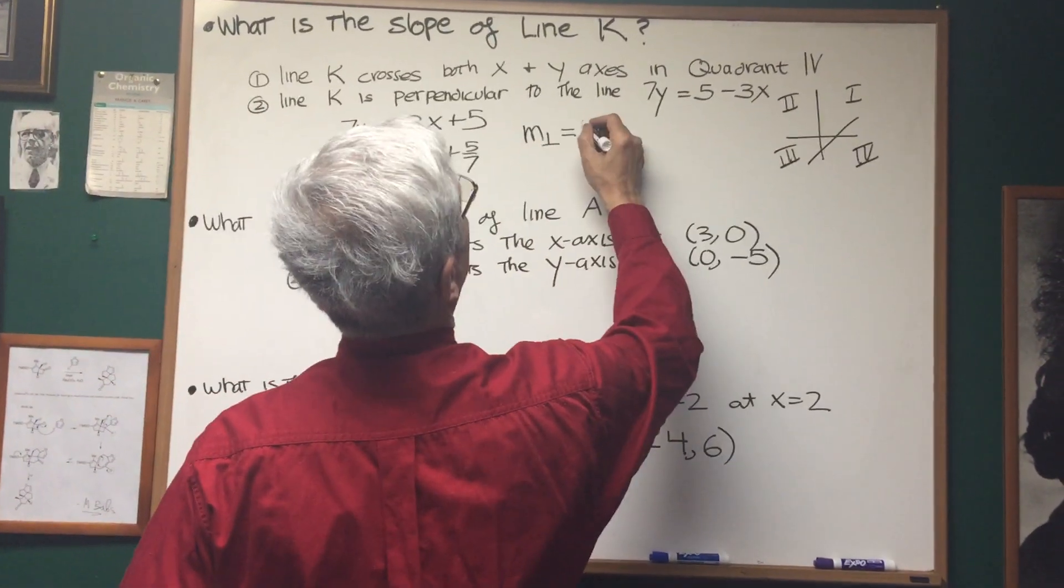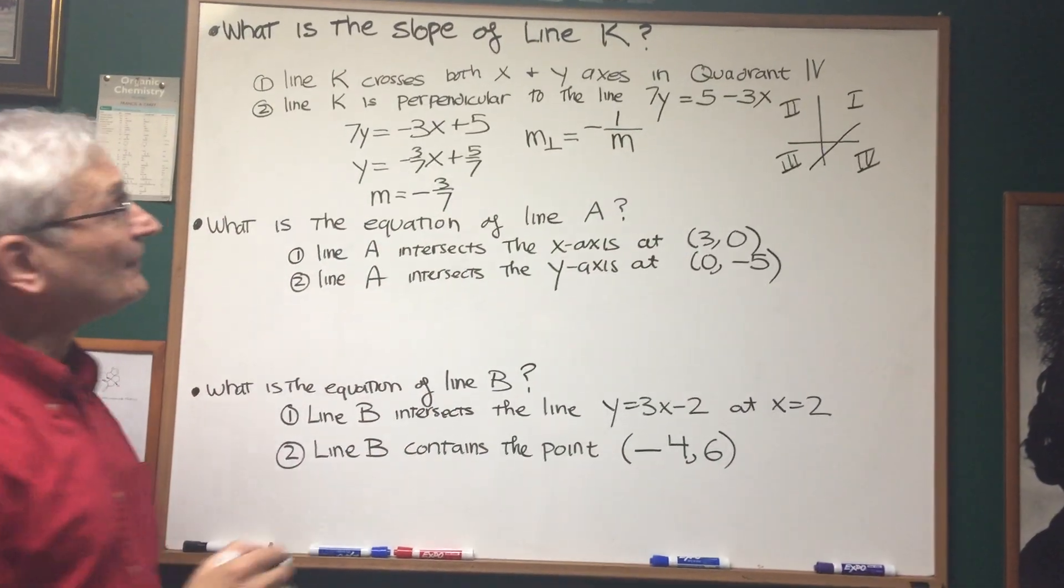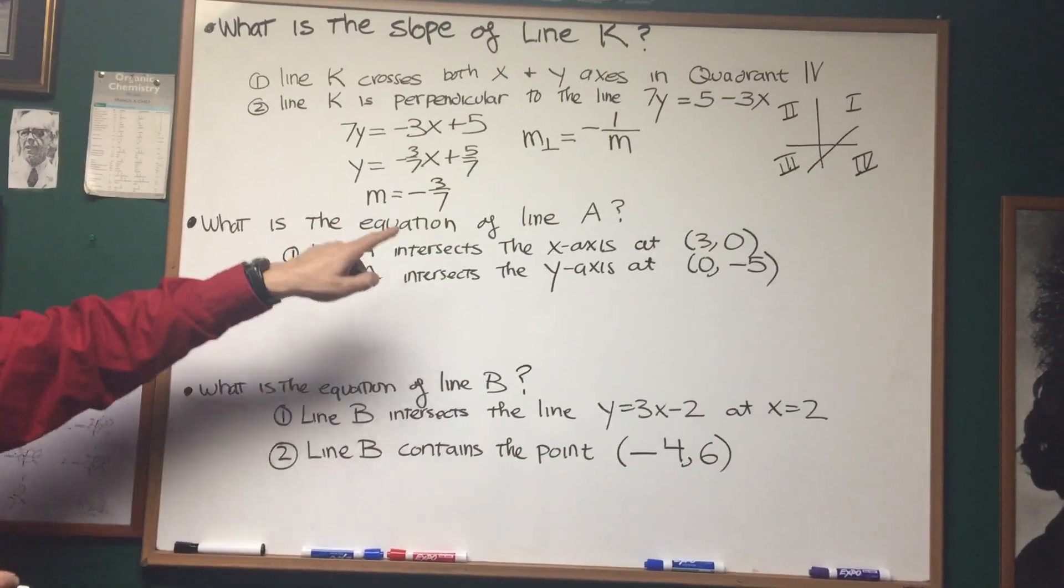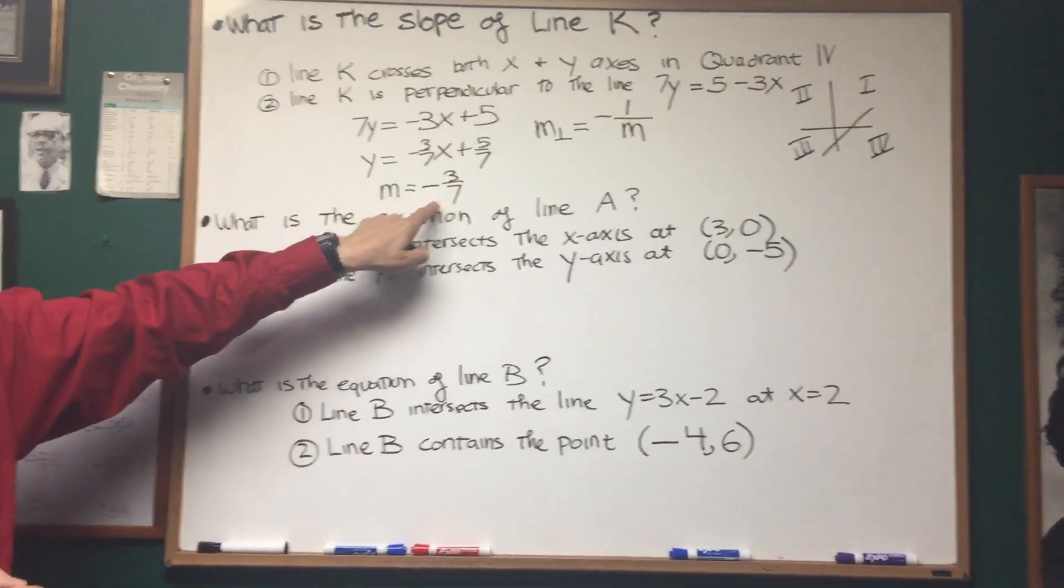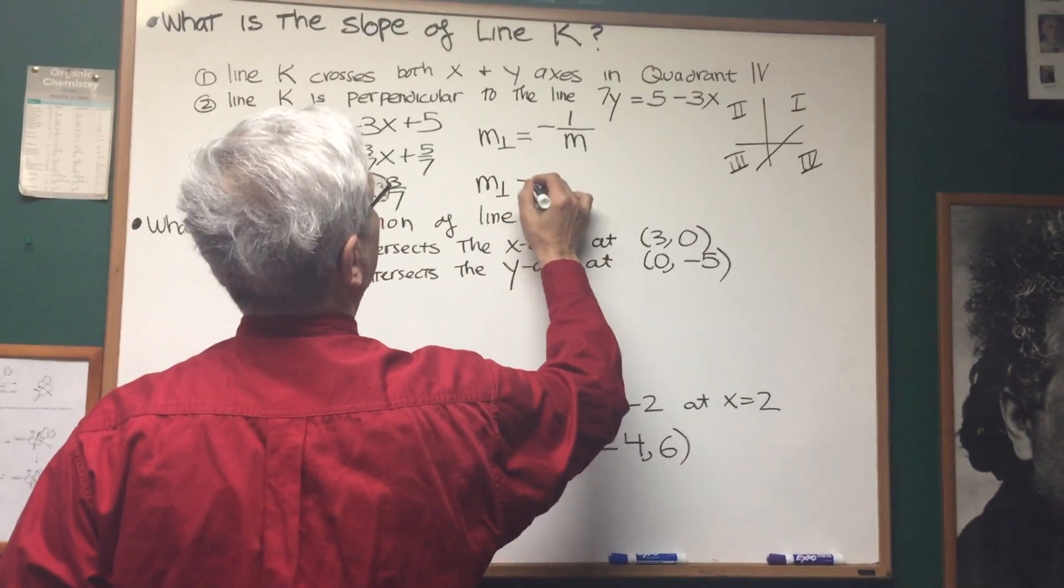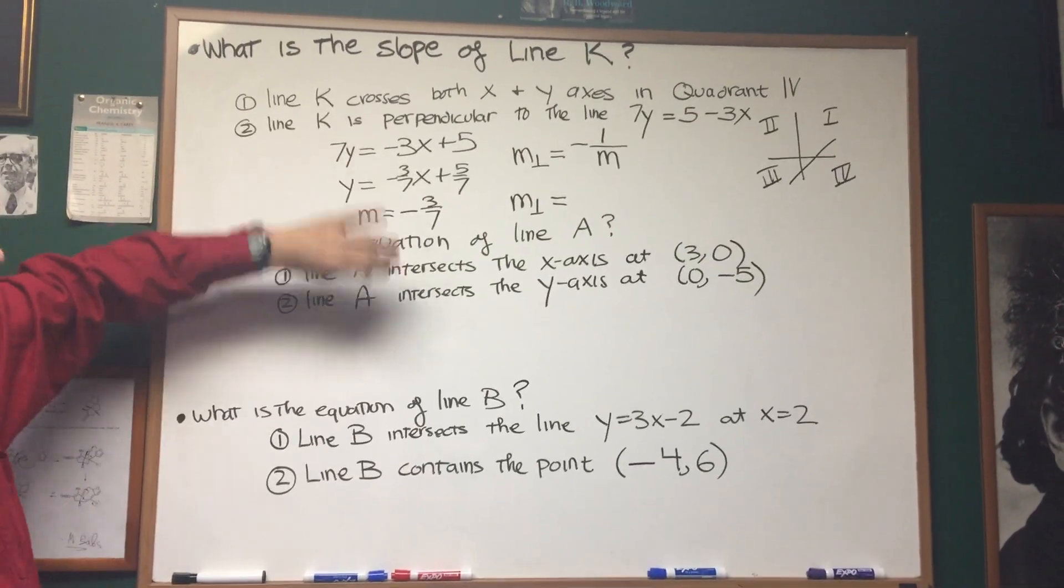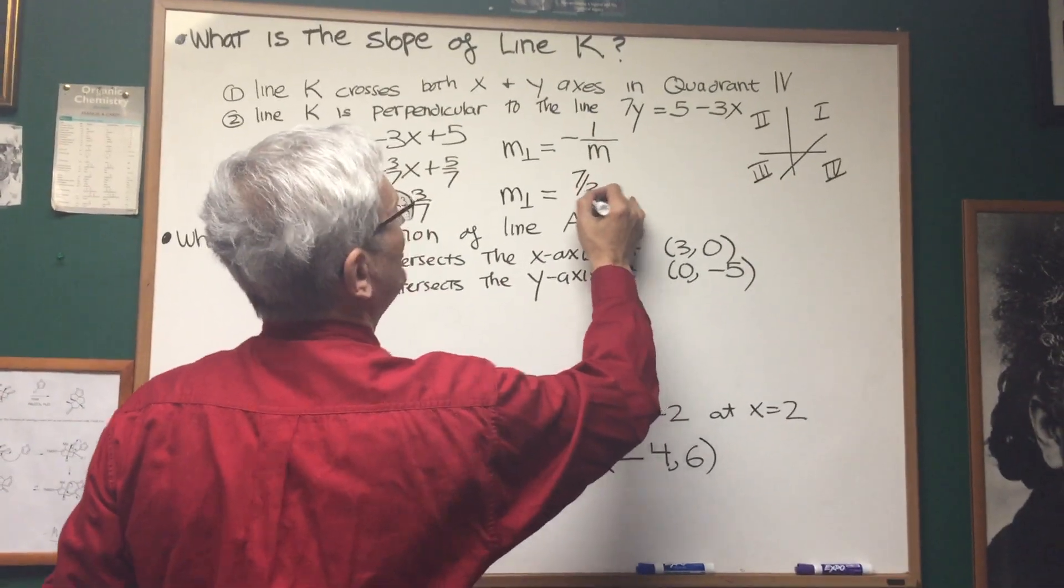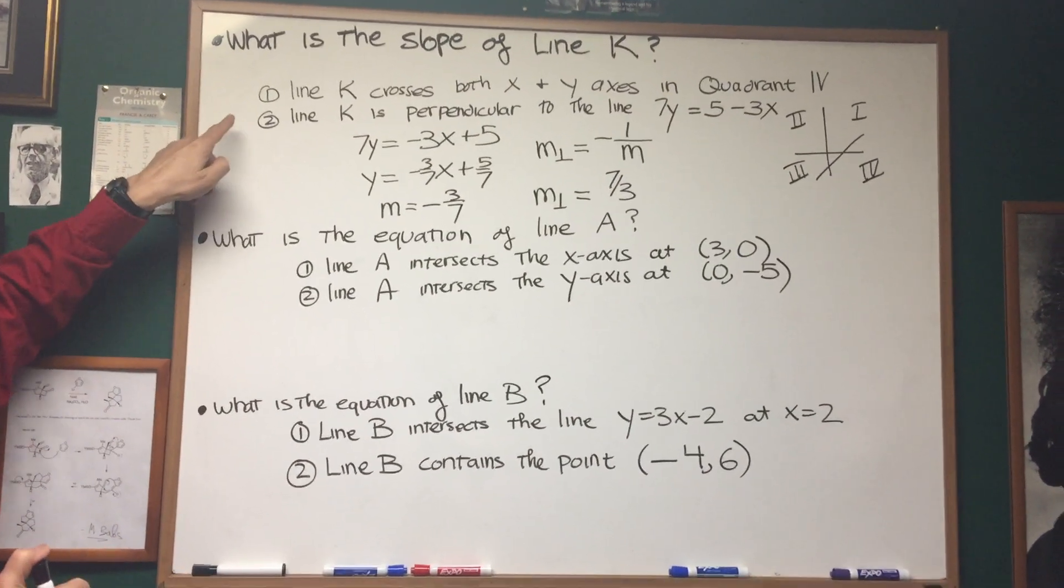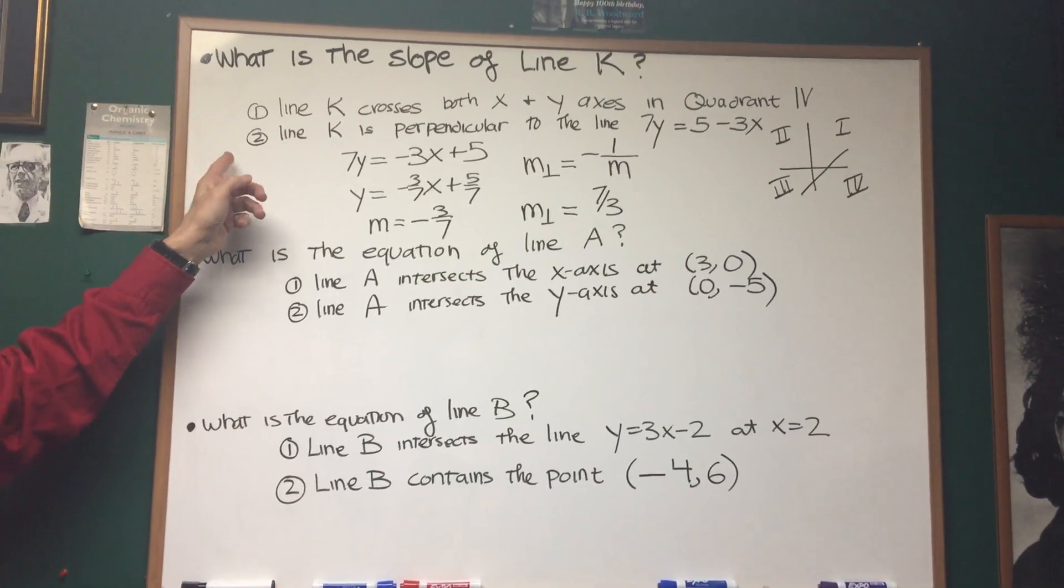We also should know that the slope of a perpendicular line is the negative reciprocal of that slope. So the perpendicular slope would have two degrees of difference, negative and reciprocal. So if line K is perpendicular to this line, that means line K has a slope that's perpendicular to negative 3/7. It's the opposite sign, which would be positive, and the reciprocal, which would be 7/3. To answer the question, statement 1 is not sufficient to answer the question, but statement 2 alone is sufficient to answer the question, so the choice is B.